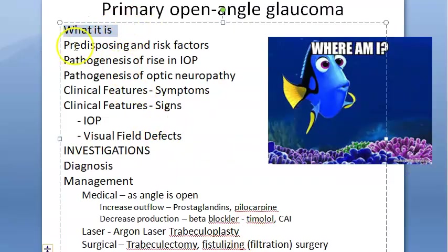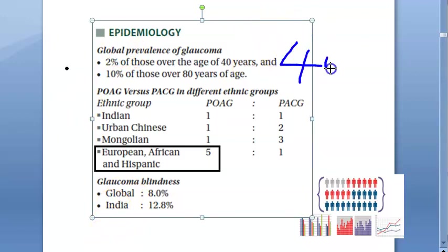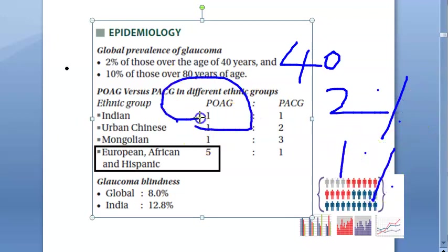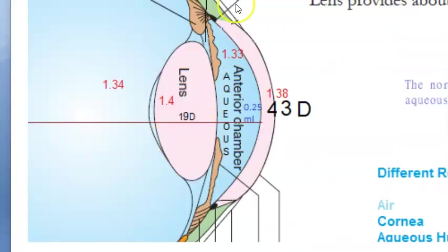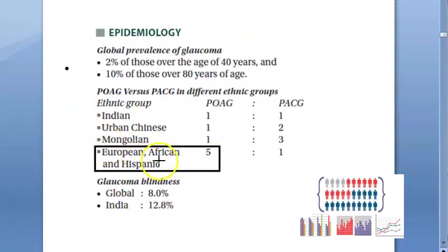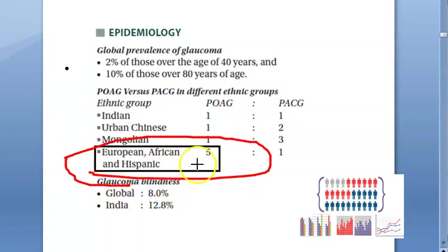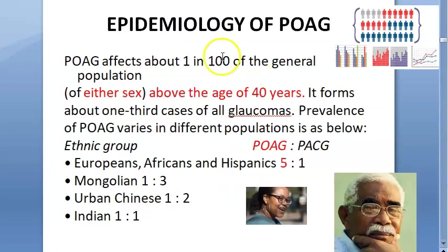Epidemiology: above 40 years of age, 2% of people will have glaucoma, and 1% will specifically have POAG. In POAG, the iridocorneal angle is open — that's why it's called open angle glaucoma. The problem here is the trabecular meshwork becomes clogged, though sometimes the cause is unknown.